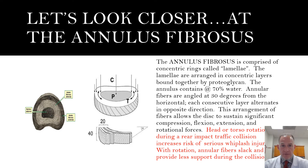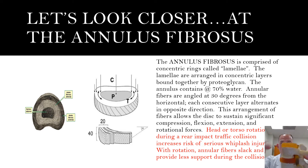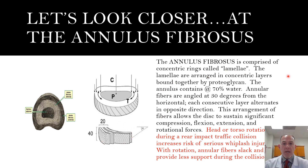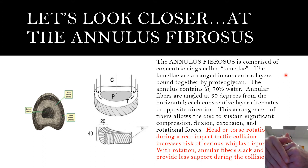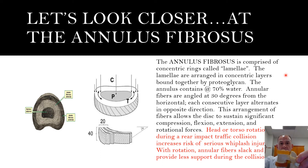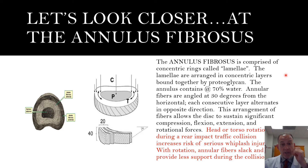Looking closely at the annulus fibrosis, it is comprised of concentric rings angled down at 30 degrees from the horizontal. The concentric rings of the annulus are called lamellae, and they're bound together by proteoglycan. The alternating annular fibers at 30 degrees from one lamella ring to the other provides stability when we place weight on the disc — the downward axial loading will cause the fibers to somewhat lock, providing more stability and protection against axial loading and trauma.